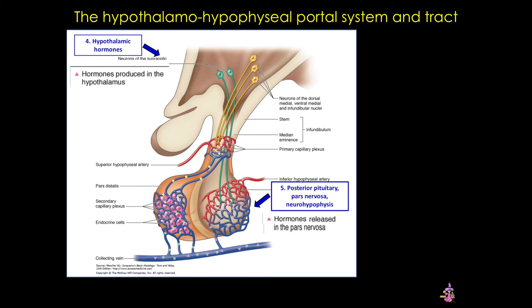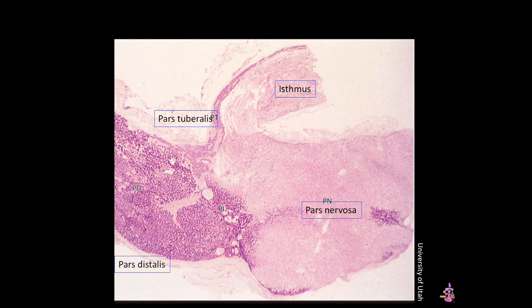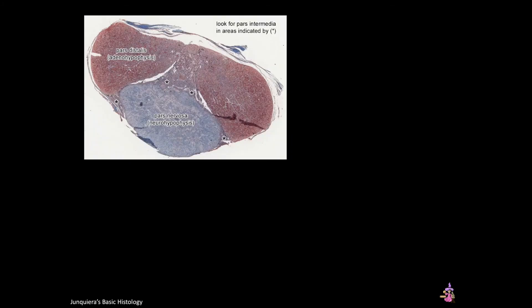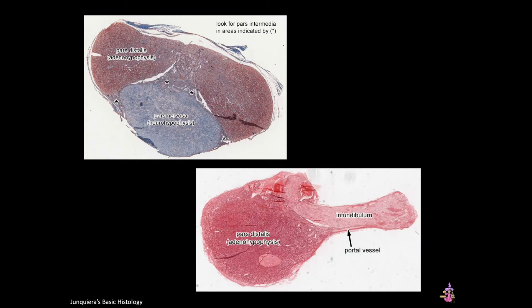Now let's take a look at some histological sections of the pituitary before we discuss each lobe in more detail. In this H&E stain you can appreciate the more cellular pars distalis on the left, and the pars nervosa with its nervous tissue on the right, reflecting their different origins. This section also shows the pars tuberalis and the isthmus, or infundibulum, quite well. A couple more sections illustrate the differences between the pars distalis and pars nervosa, and this lower image has a better view of the infundibulum, with a black arrow showing a portal vessel within this area.